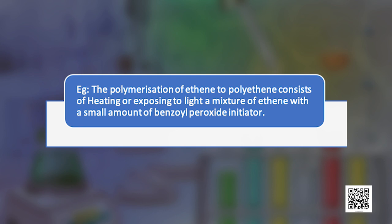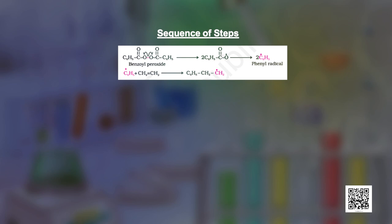This reaction consists of heating or exposing to sunlight a mixture of ethene with a small amount of benzoyl peroxide initiator. The process of polymerization can be divided into three steps. The first step involves the addition of a phenyl free radical, formed by the peroxide, to the ethene double bond, thus generating a new and larger free radical as shown in the equation. This step is called the chain initiating step.